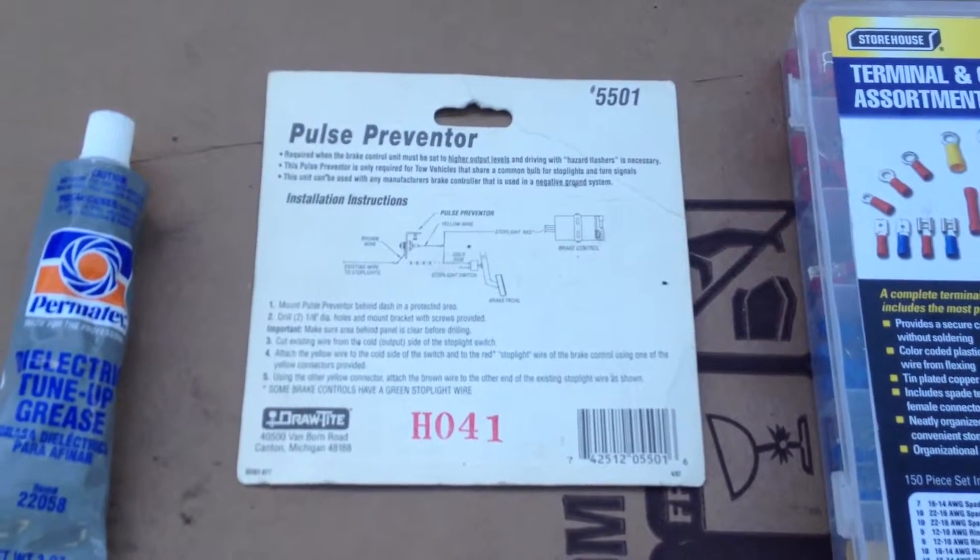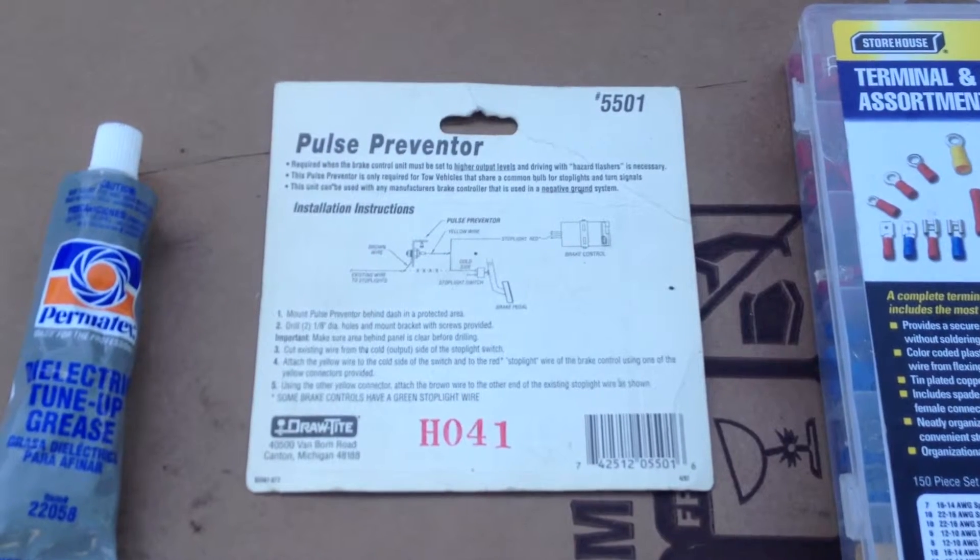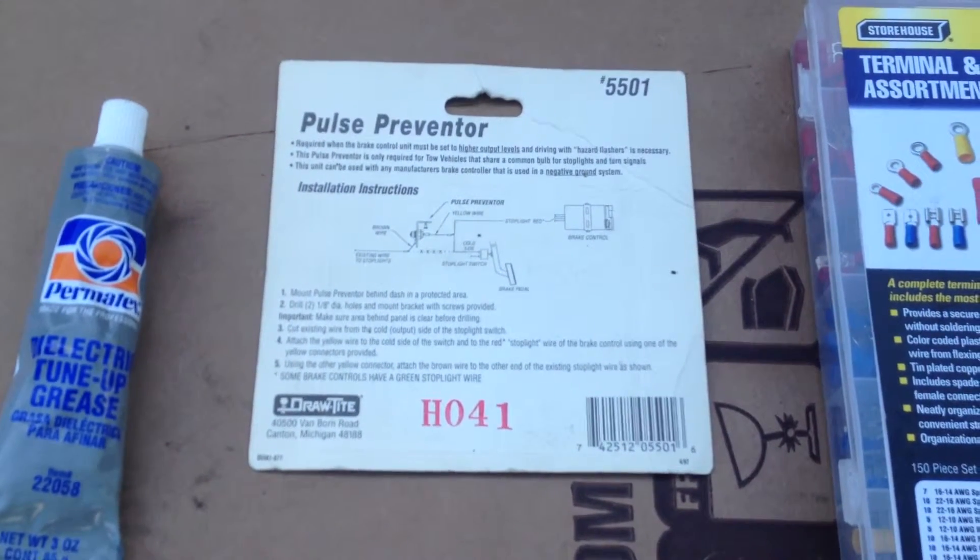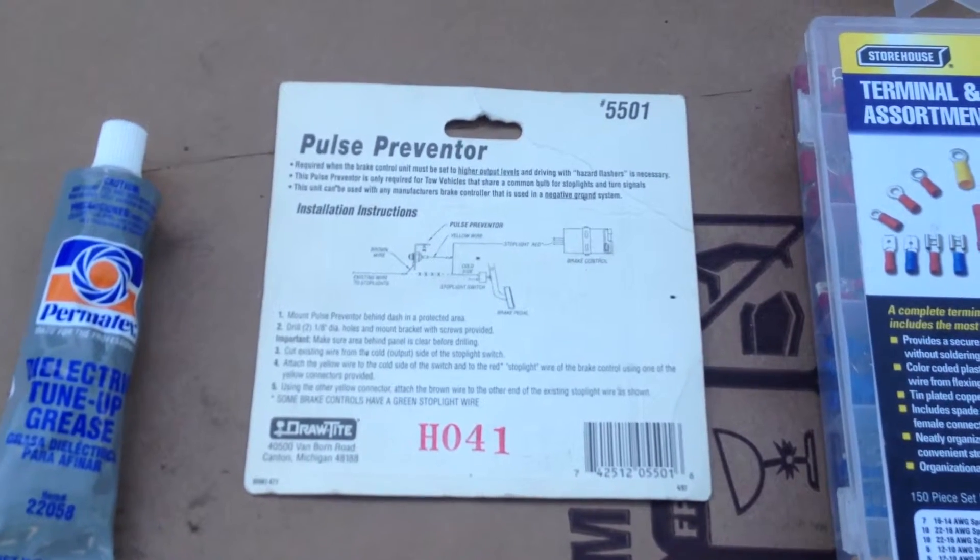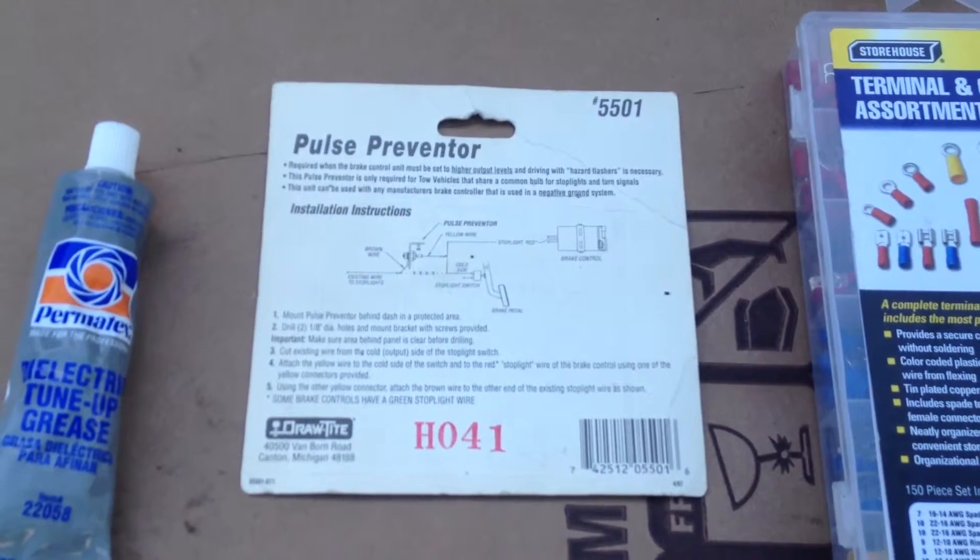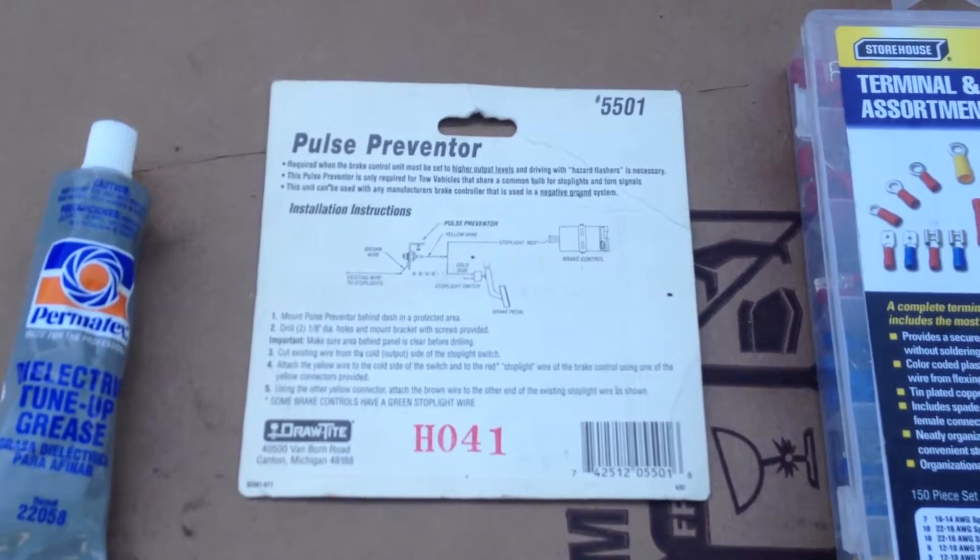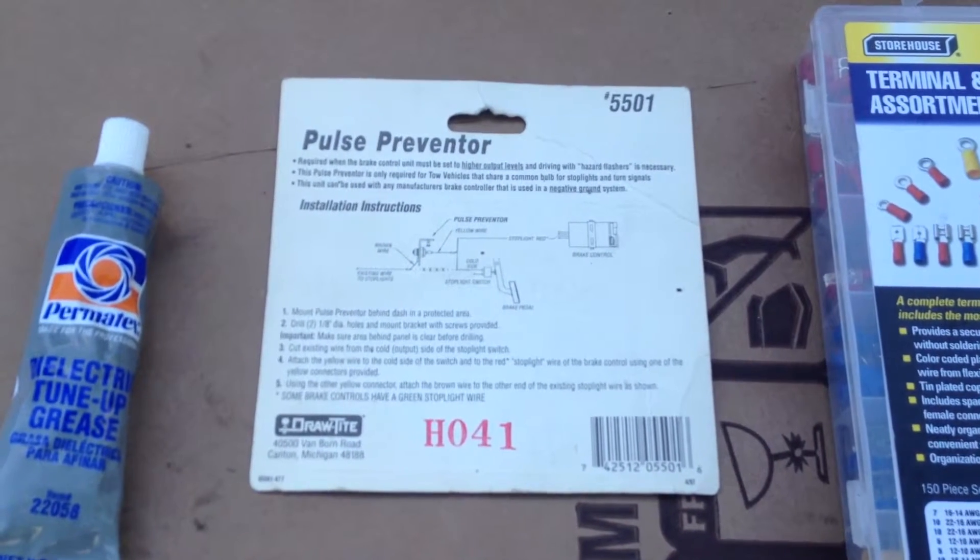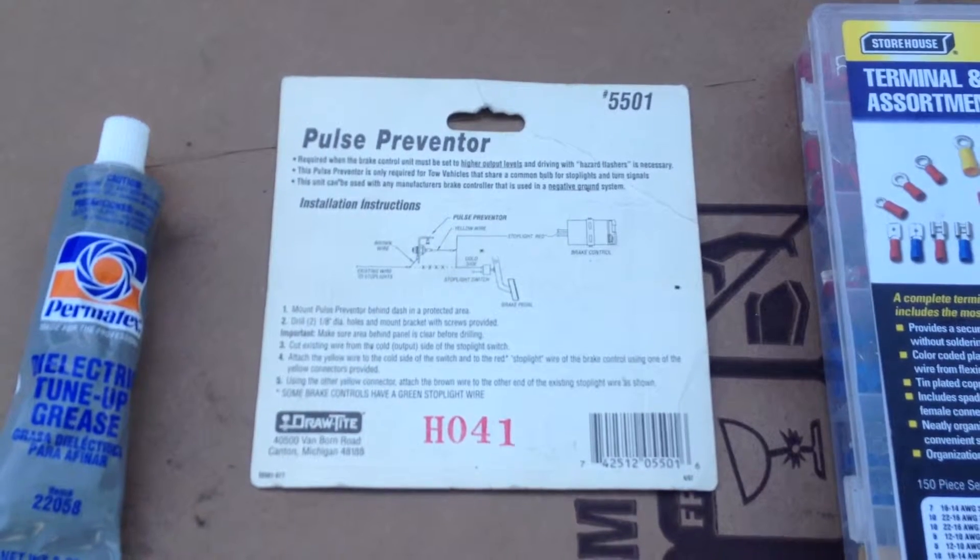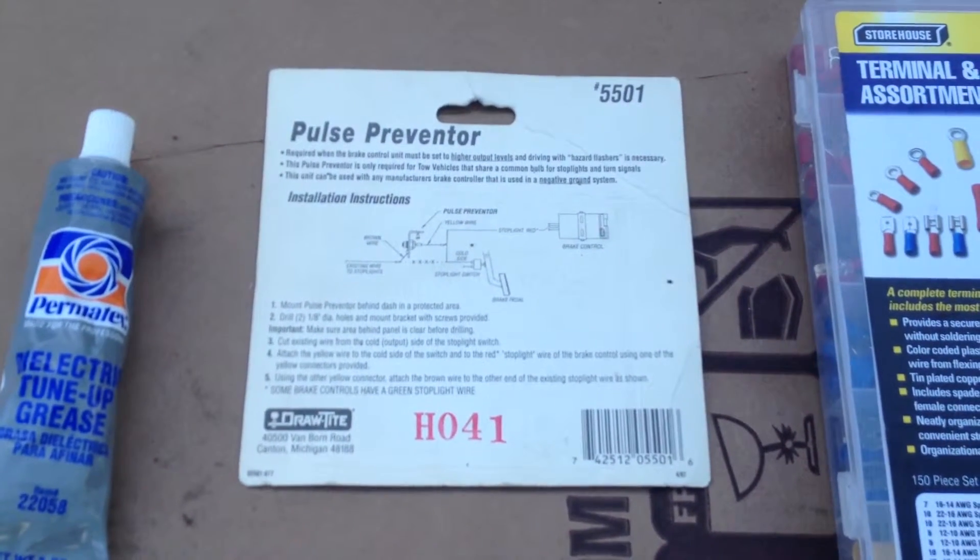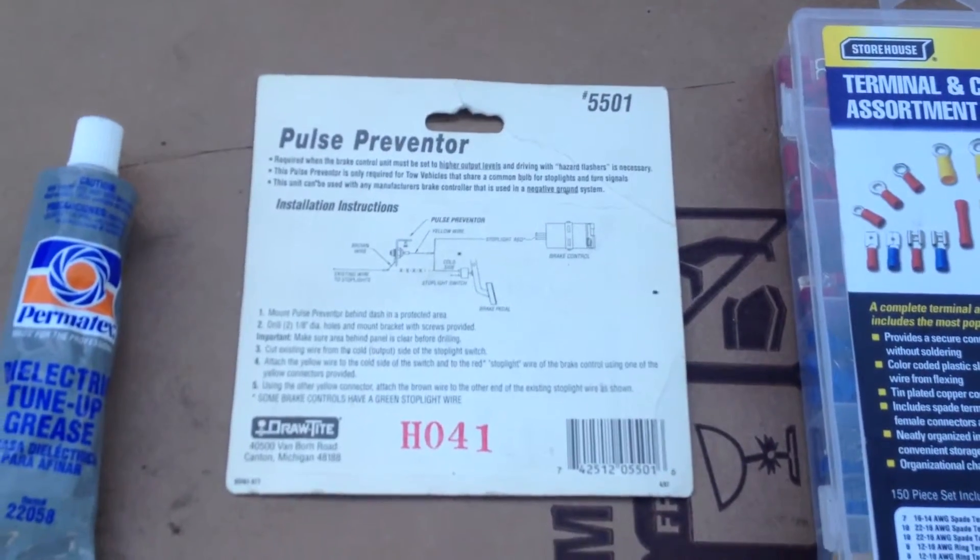This video applies to most anything that has a tube light system for the tail and turn signals where the turn signals when the hazards are on will feed back up into the brake light line and cause pulsing of the brake controller. It's a relatively inexpensive little item and relatively easy to install.